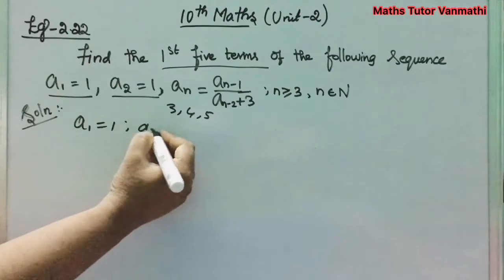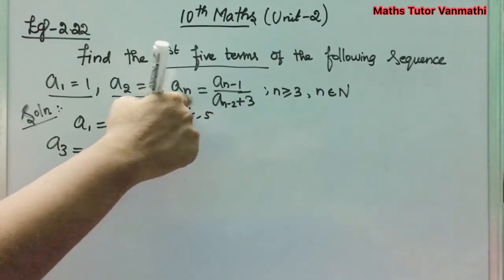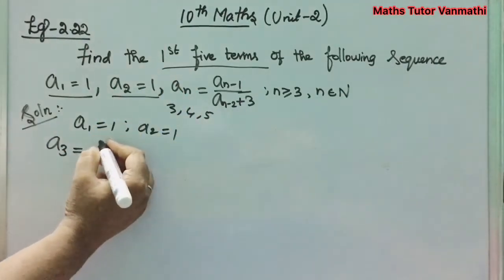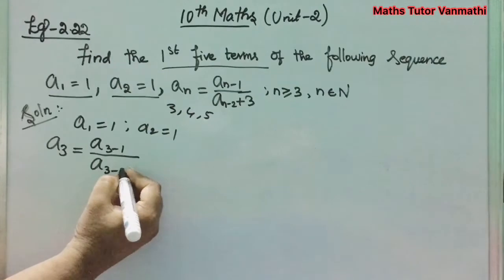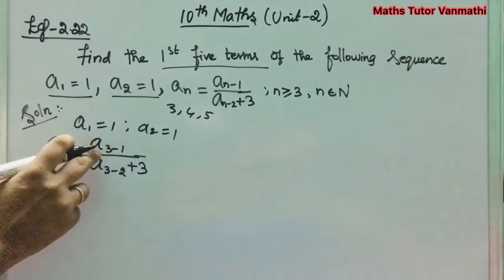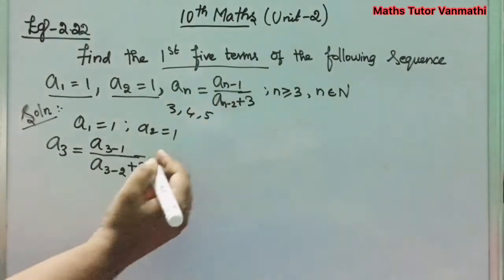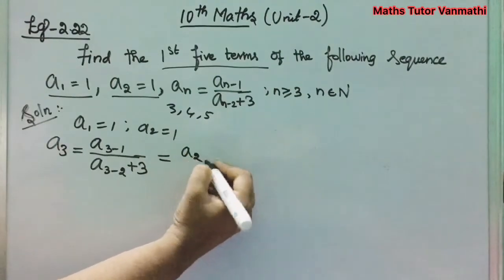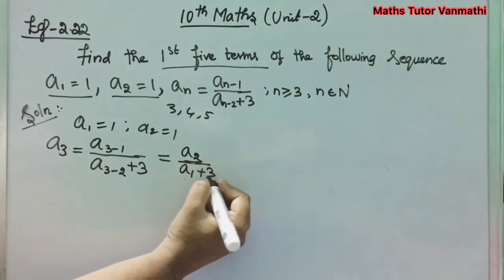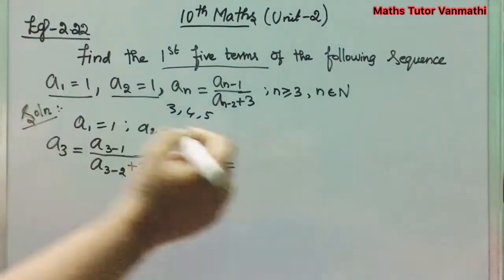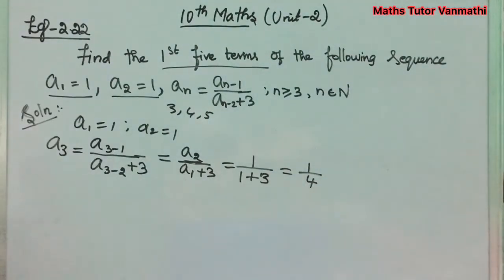Given a_1 = 1 and a_2 = 1. Finding a_3: substituting n = 3, we get a_3 = a_(3-1) / a_(3-2) + 3 = a_2 / a_1 + 3 = 1 / (1 + 3) = 1/4. So a_3 = 1/4.